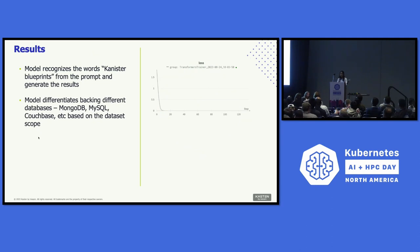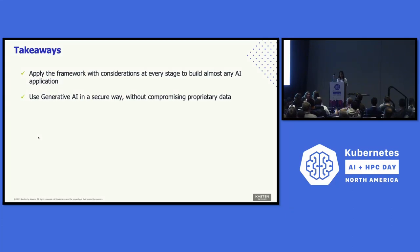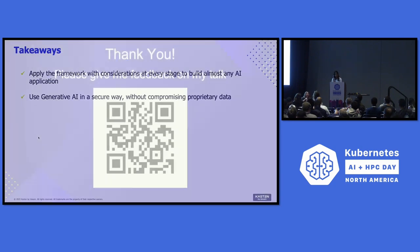The final results — and although we don't have time today to show a real demo — were that the model recognized canister blueprints by prompt and generated results. It was able to differentiate between backing up various different databases and provided different YAML configurations accordingly. The key takeaway is that we can apply a similar framework with considerations at every stage to build almost any AI application, using generative AI in a secure way without compromising proprietary data. I encourage the community to harness the power of generative AI and enhance your cloud-native applications without losing competitive advantage.